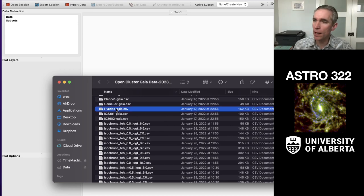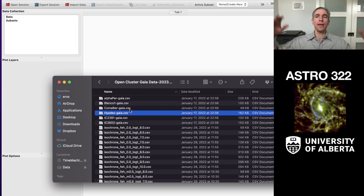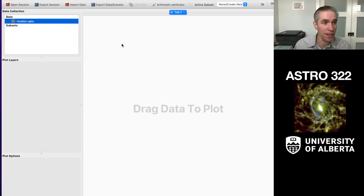And I'm going to select the Hyades. As an example, for your homework, you will have to do the same exercise. Pick something else. You know, Blanco1, IC2391. Just let your spirit take you. But I'm going to do the Hyades.